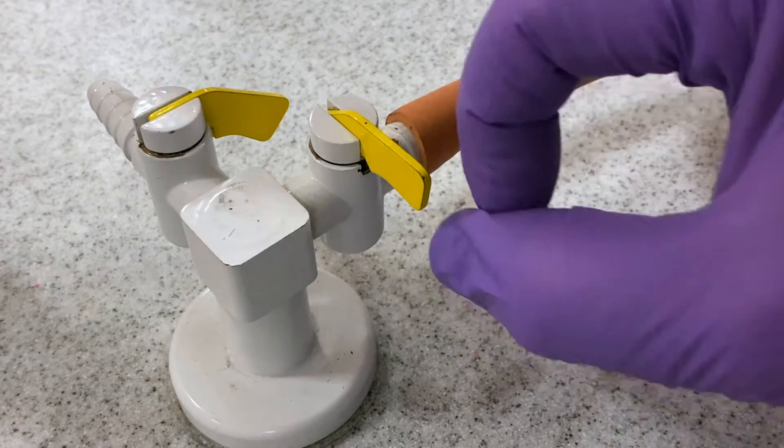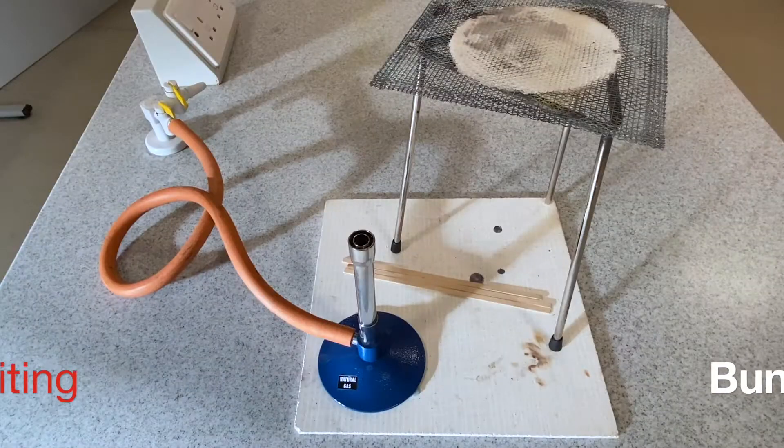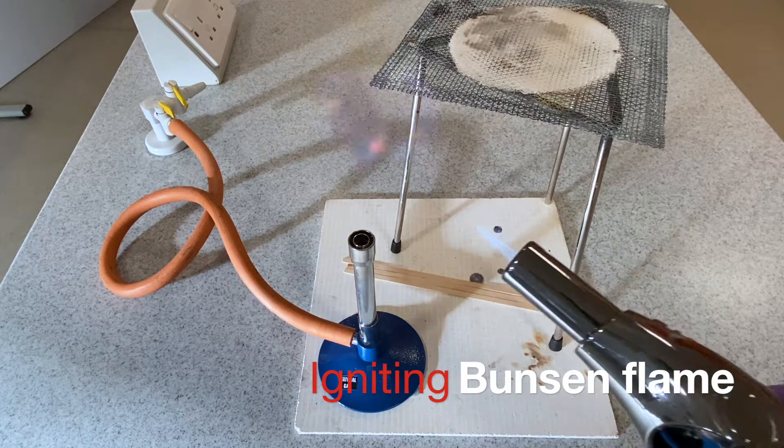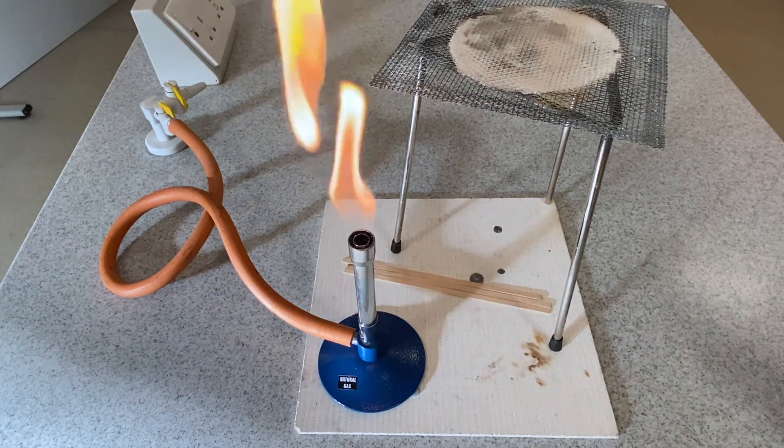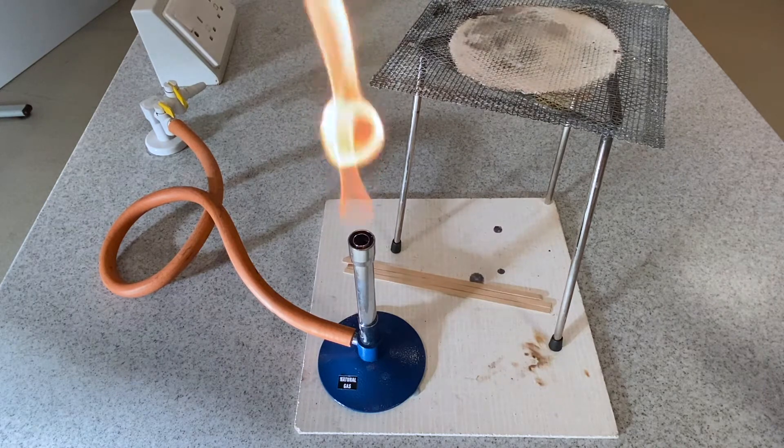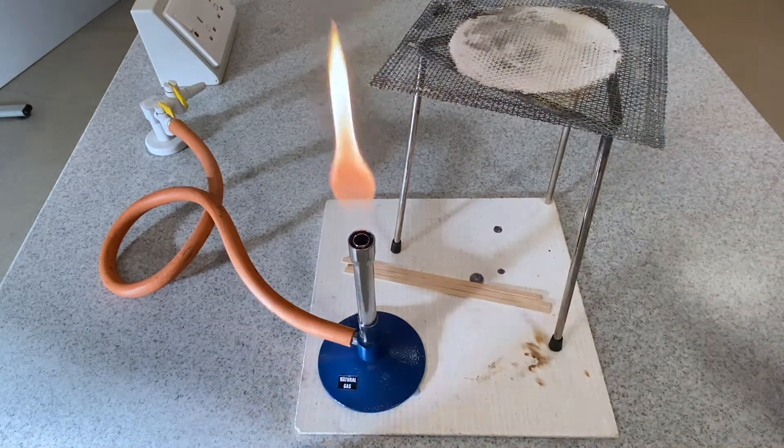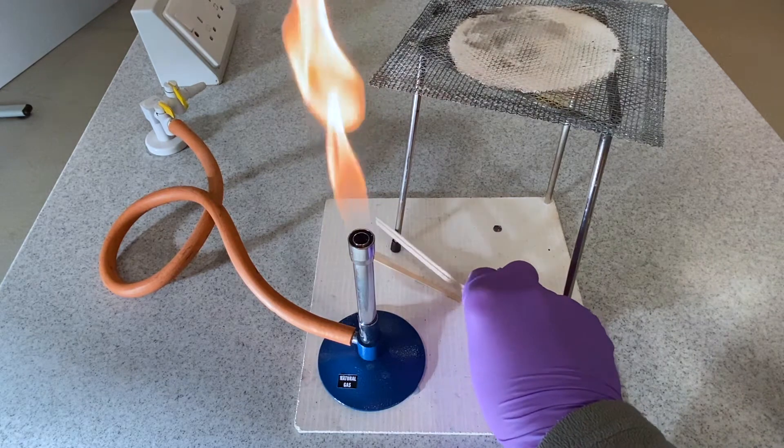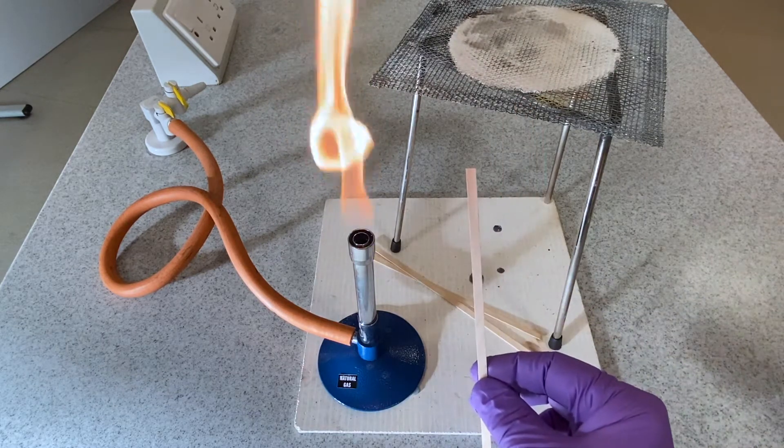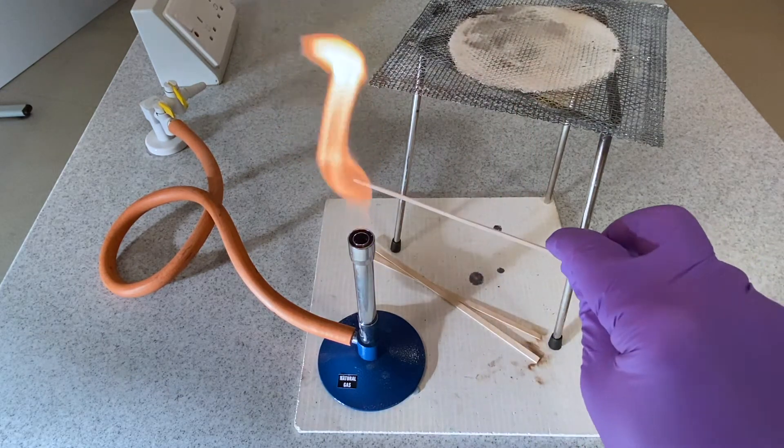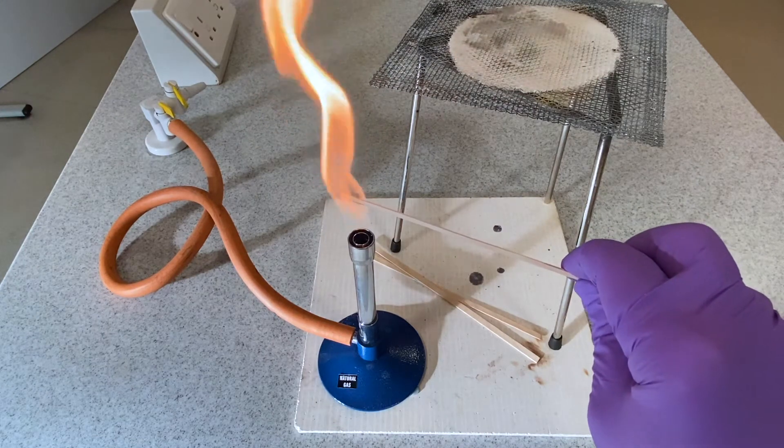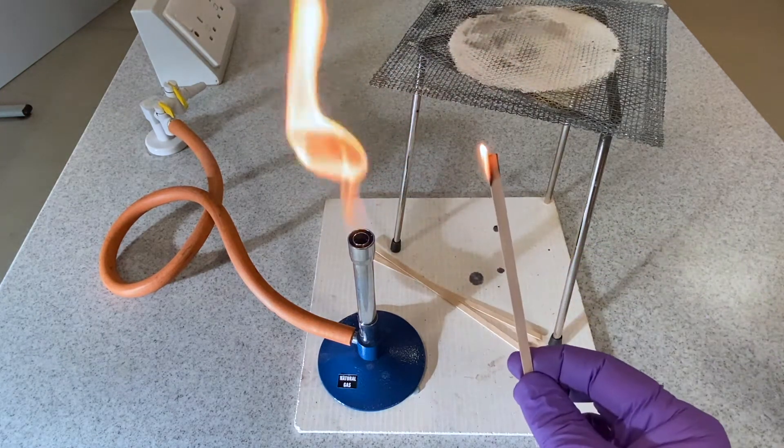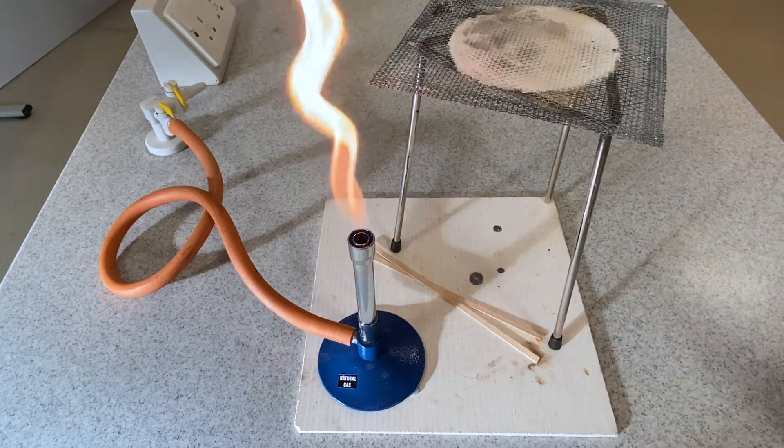The Bunsen flame can be lit using a gas lighter or from a splint. It is best not to use matches directly to ignite the Bunsen. Always ignite the Bunsen on a luminous flame, which means the collar at the base of the Bunsen burner is closed.